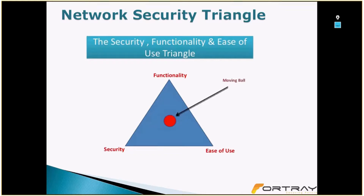Exactly — they're all linked and depend on each other. The triangle has three portions: functionality, security, and ease of use. As a network security engineer, you need to understand the relationship between these three things.